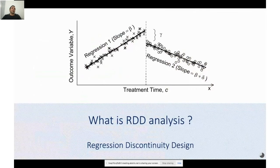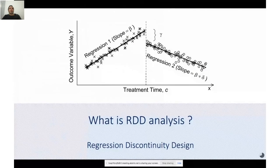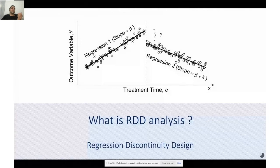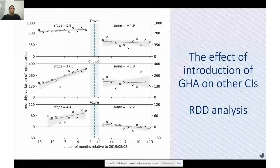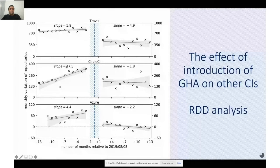We also see that the introduction of Actions has different effects on different competitors, so we decided to analyze this effect using regression discontinuity analysis (RDD). The purpose of RDD is to see how a normal trend is affected by an intervention event — the slope changes before and after introduction of the event. We found statistically significant effects of the introduction of Actions on Travis, CircleCI, and Azure, as shown by the change in slope in the monthly number of repository adoptions.